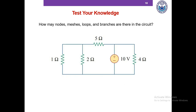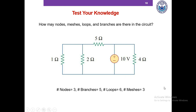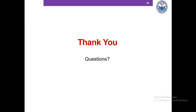There is one last exercise. Please pause this video and identify the nodes, meshes, loops, and branches, and then we'll match our answers. Hopefully you've gotten something like this: the circuit has three nodes, five branches because of five elements, six loops, and three meshes. This concludes our lecture on basic circuit variables and important circuit terminology. If you have any questions, please feel free to write them in the comment section. Thank you.